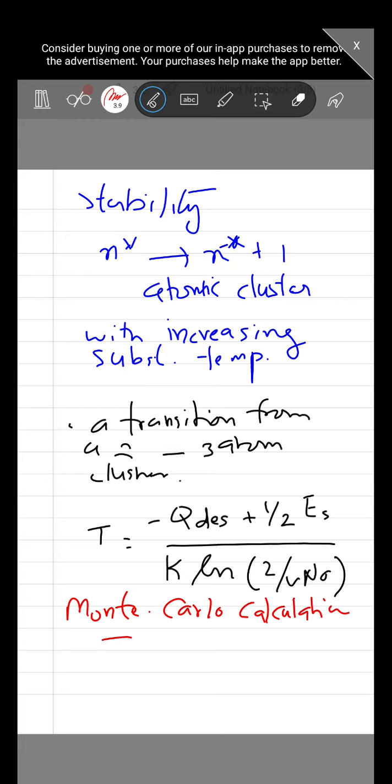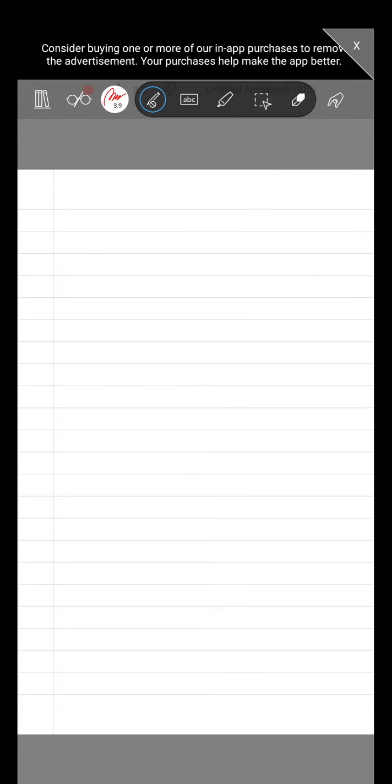Now, the saturation number of atoms, there is an expression for that. And so the saturation number of atoms which can be present is ns and it is expressed as n0 exponential minus q desorption minus q d, the bonding bond energy divided by kT.